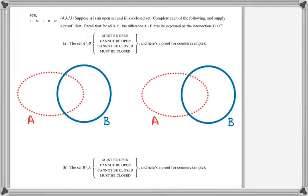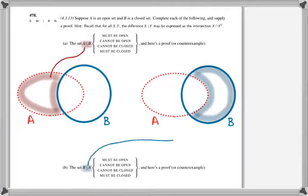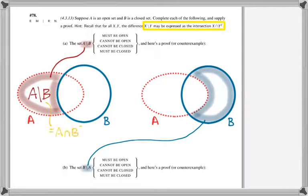Remember what set differences are. A minus B is all points which are in A but not in B, and B minus A is the points in B but not in A. The key to an expedient solution is to reframe your understanding of the set difference using an intersection instead.